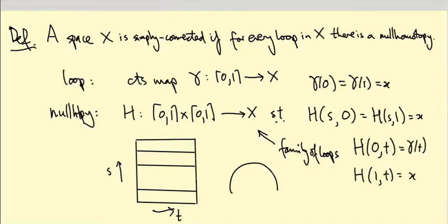So here's a picture. There's my loop gamma. As s varies, I get a family of loops, and in the end I get the constant loop at this base point little x.